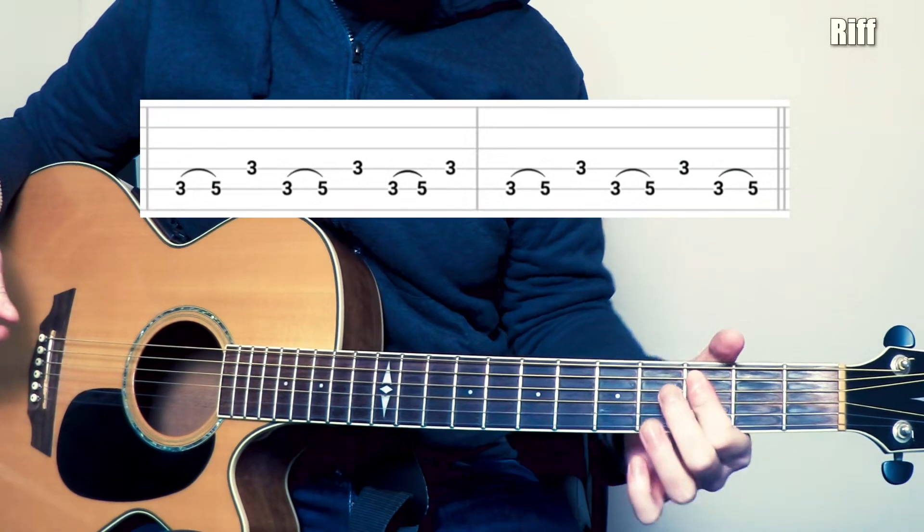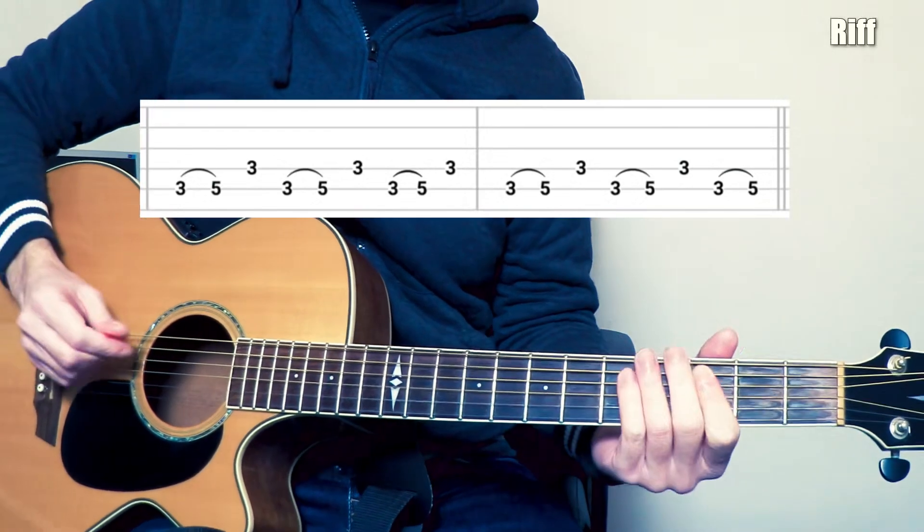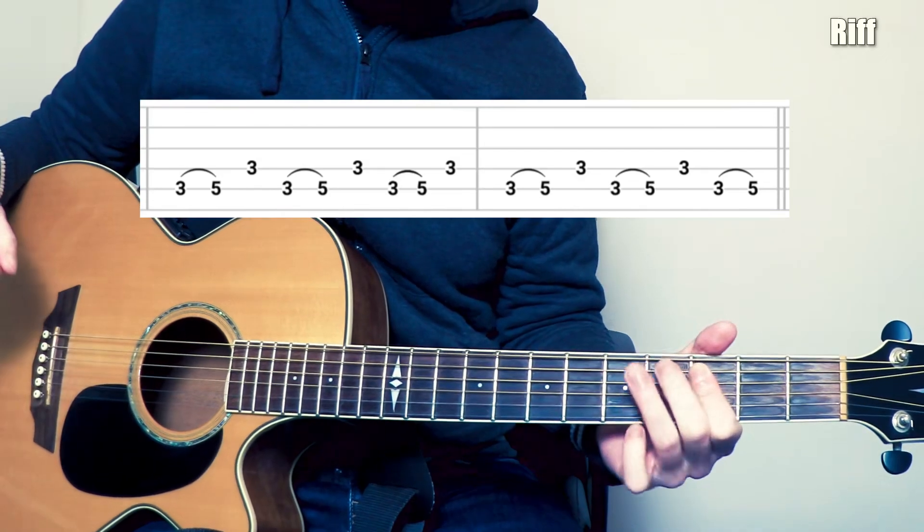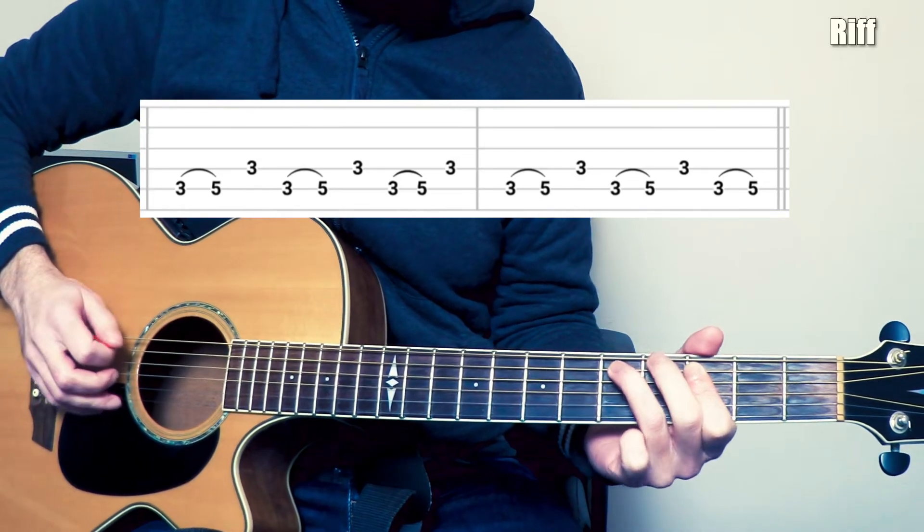Alors pour ce riff, on vient placer notre index en barré case 3 sur les cordes de La et de Ré. Et le truc, ça va être de faire un petit hammer en case 5 sur la corde de La avec notre annulaire.